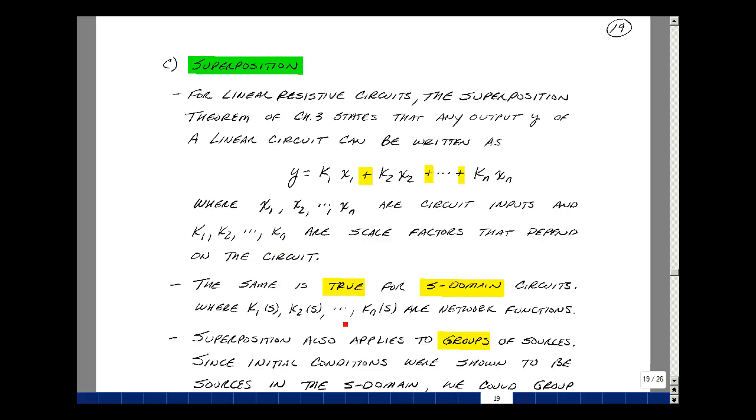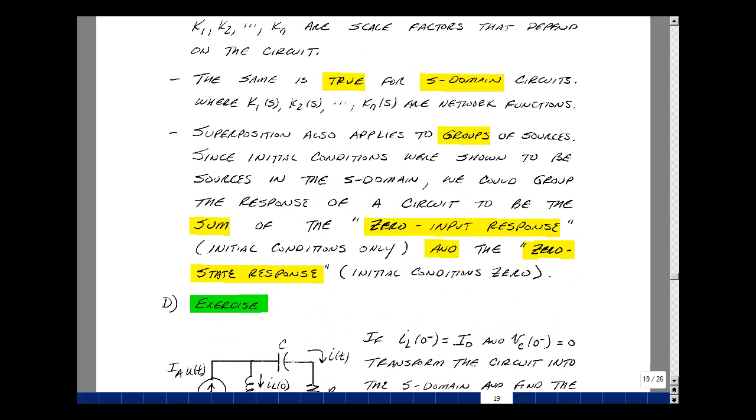Now, the same is true in the S domain. We're going to have that y of s is equal to k1 of s times x1 of s, and so on. Now, we can also apply superposition to groups of sources. Since our initial conditions were shown to be sources in the S domain, we could group our response in terms of the sum of the zero input response, which is initial conditions only, and the zero state response, which is having zero initial conditions.